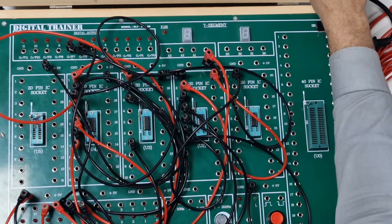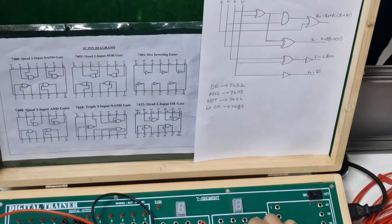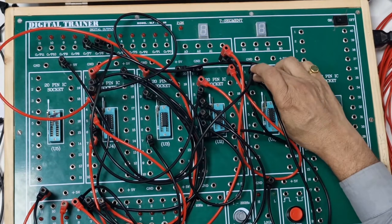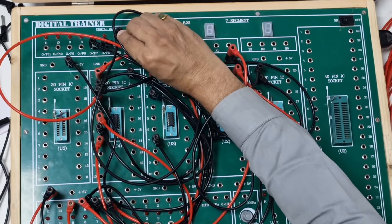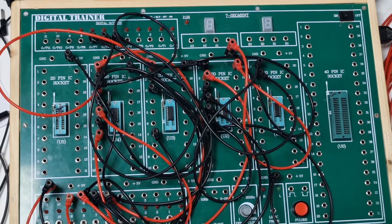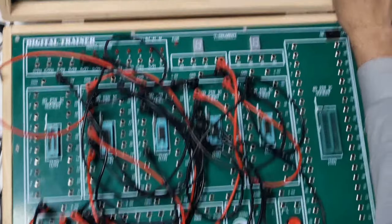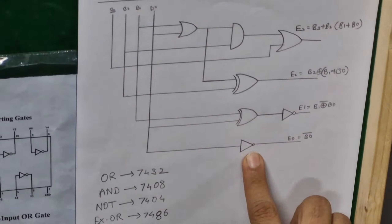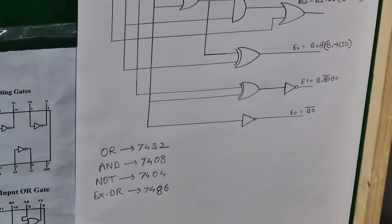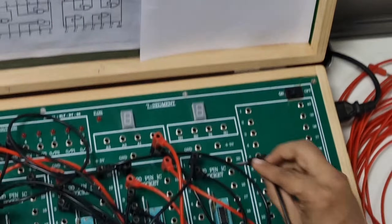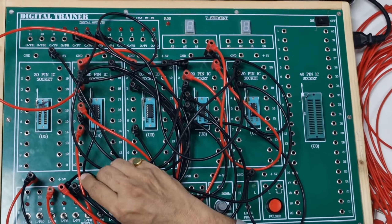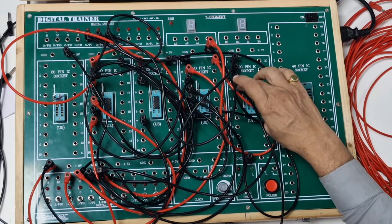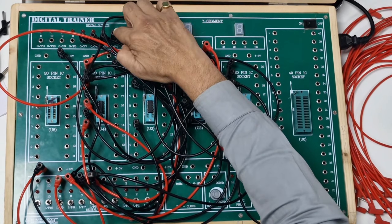The NOR gate has one input and one output. That input I have given, and the output — pin 2 — is the output for the NOR gate, and this is my E1. The last equation is E0 equals B0 bar, which is very simple. We can use the second NOR gate. The input of the second NOR gate is B0, and the output of this is my E0.